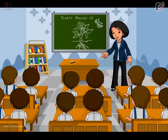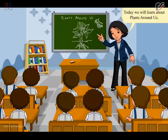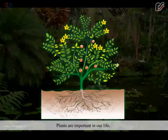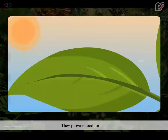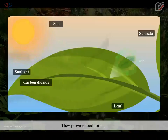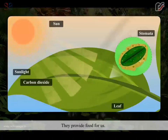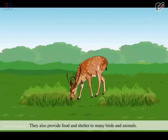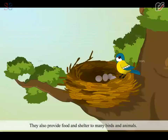Hello children, today we will learn about plants around us. Plants are important in our life. They provide food for us. They prepare food through their leaves. They also provide food and shelter to many birds and animals.